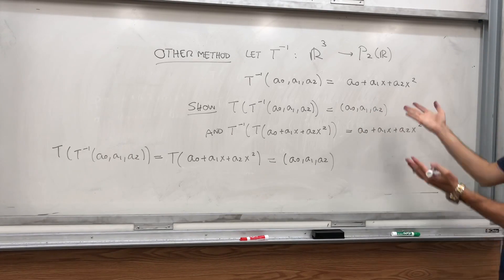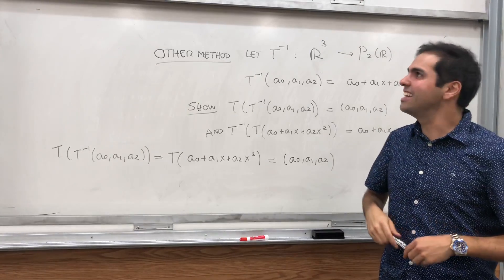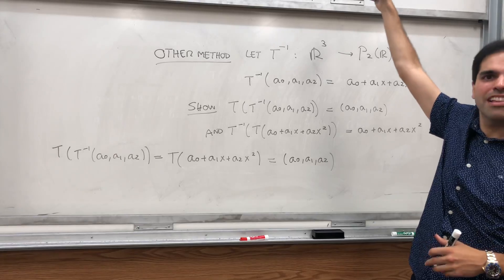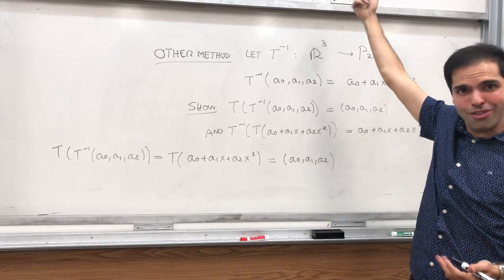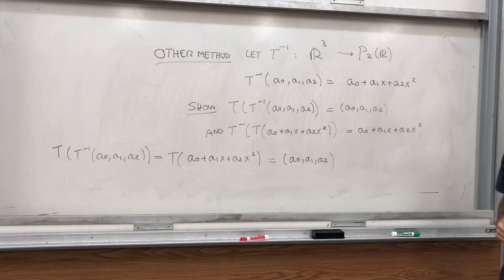So, but the only problem with this method is that you have to explicitly find an inverse. What makes the other method better, I mean, so the first method better, is that you never have to define the inverse of T.